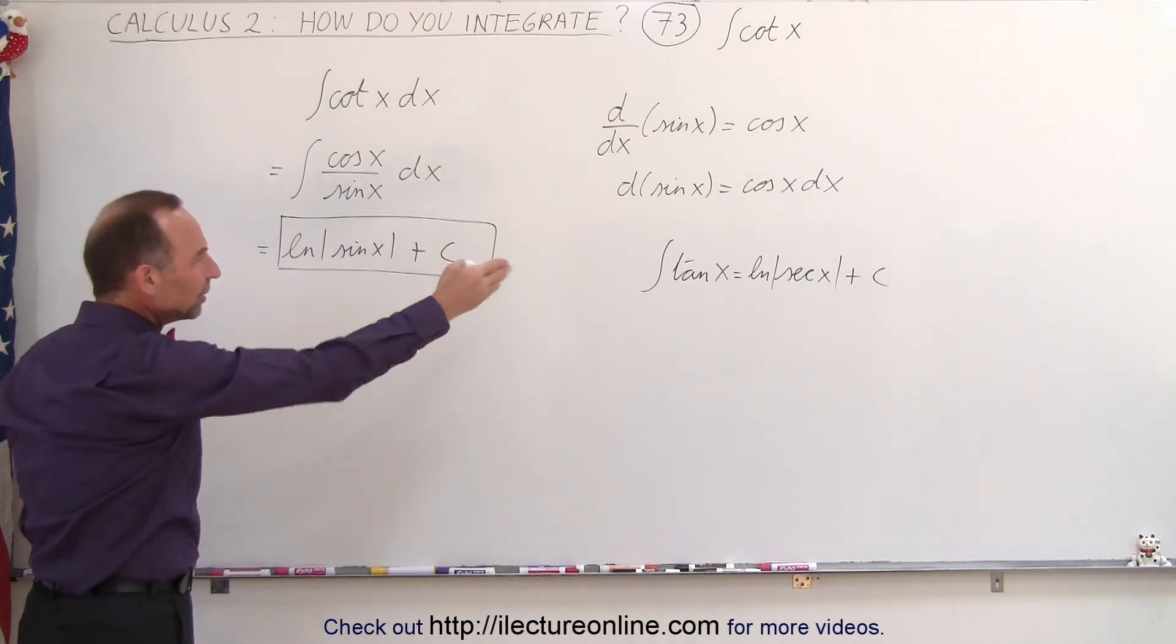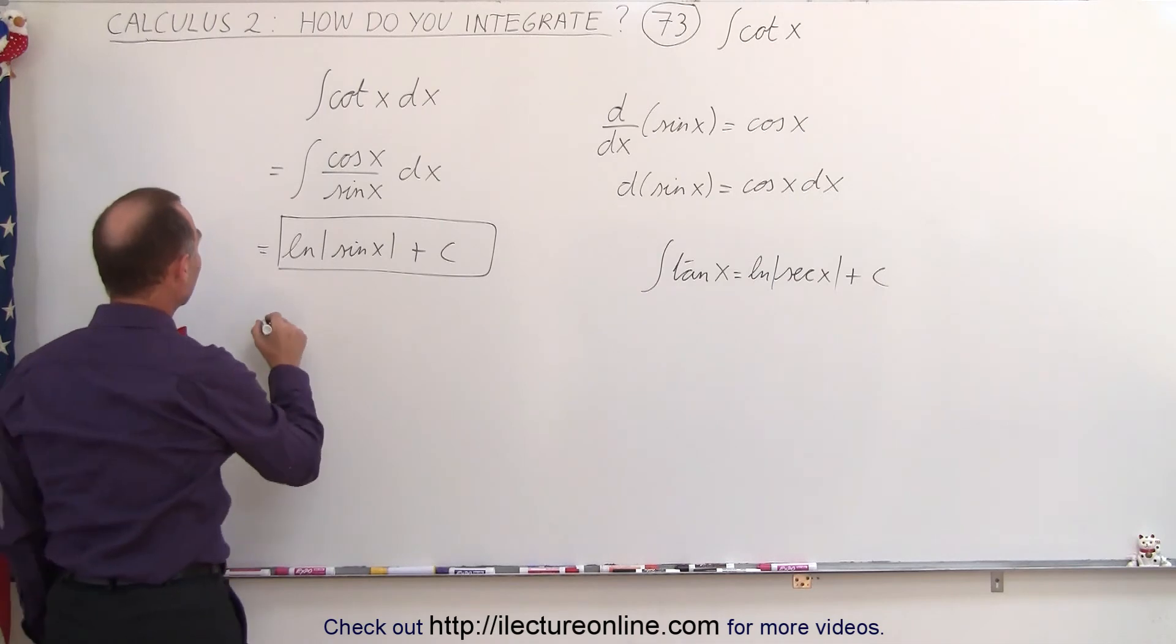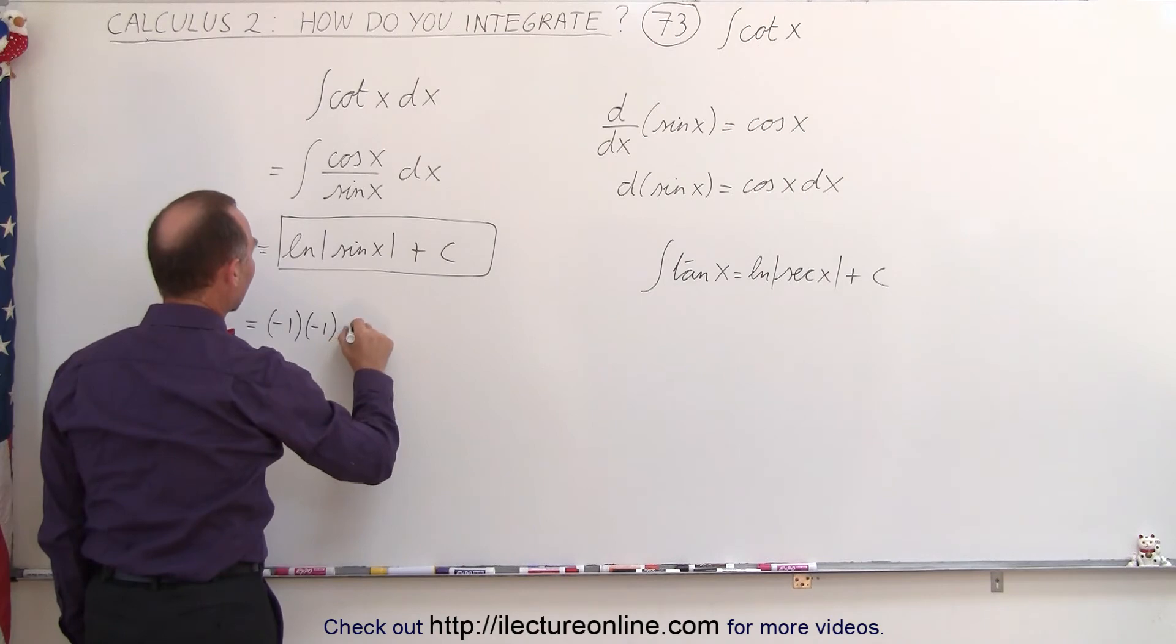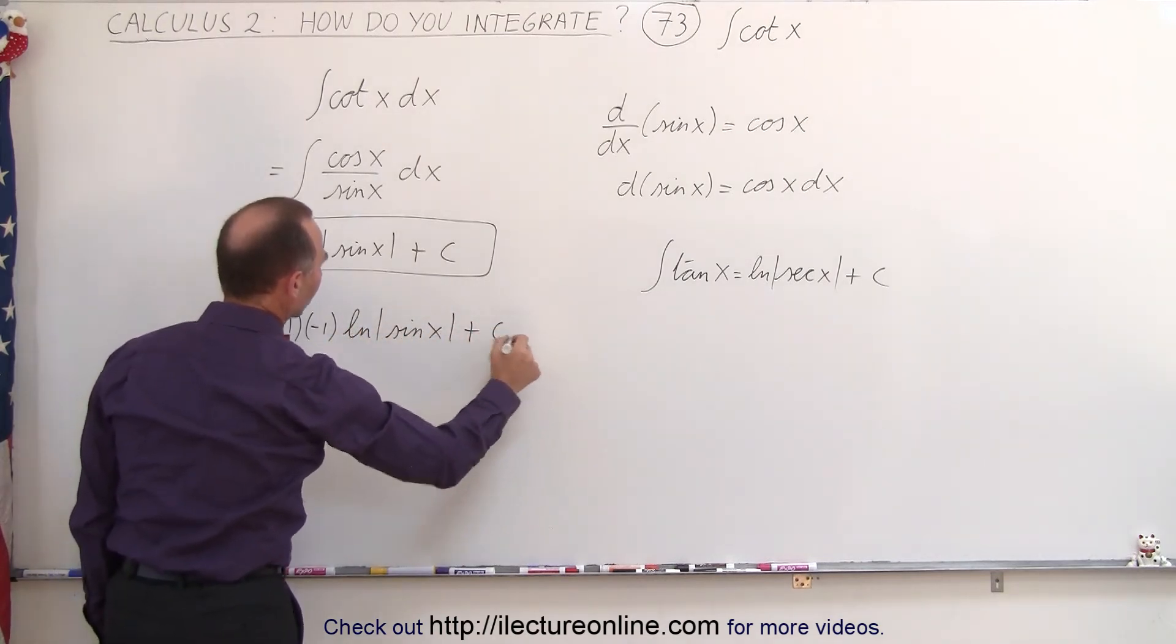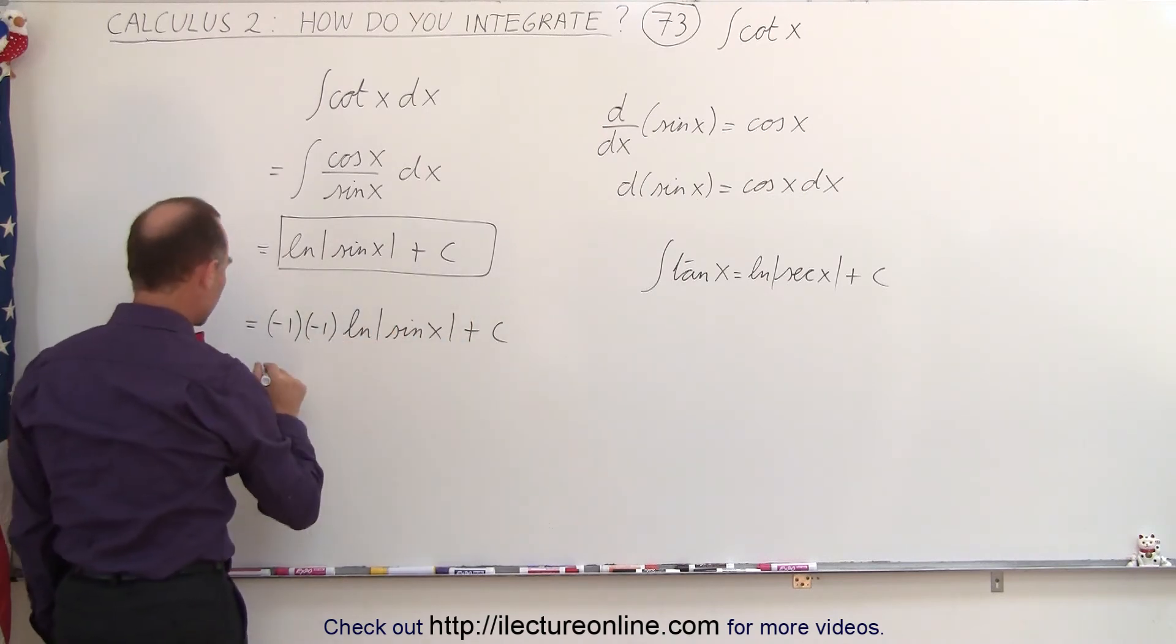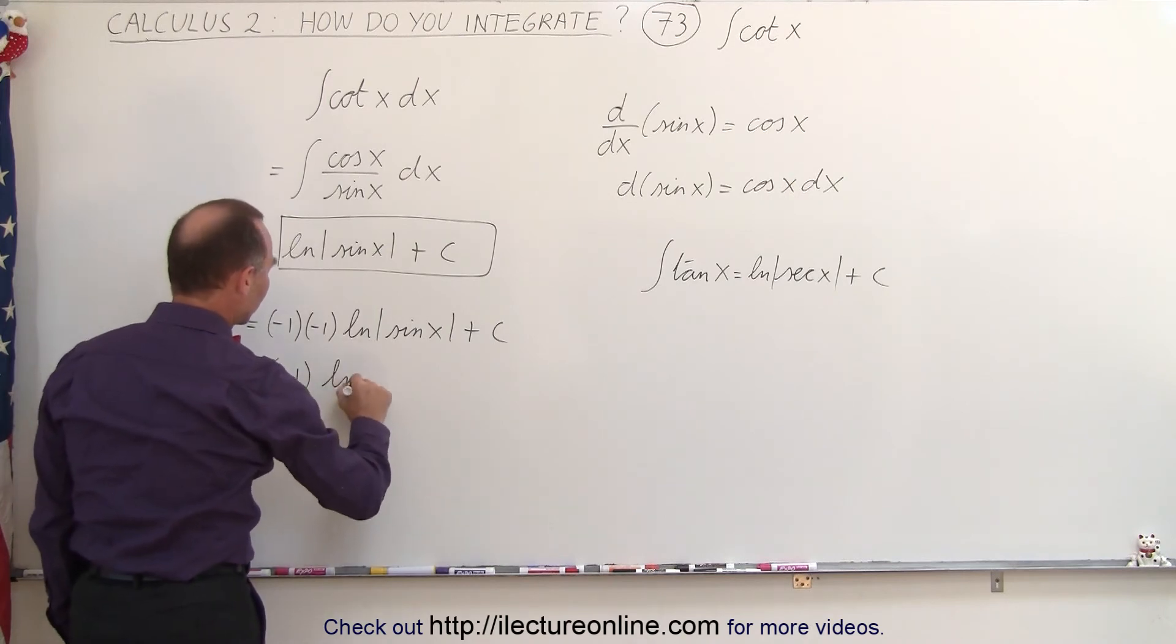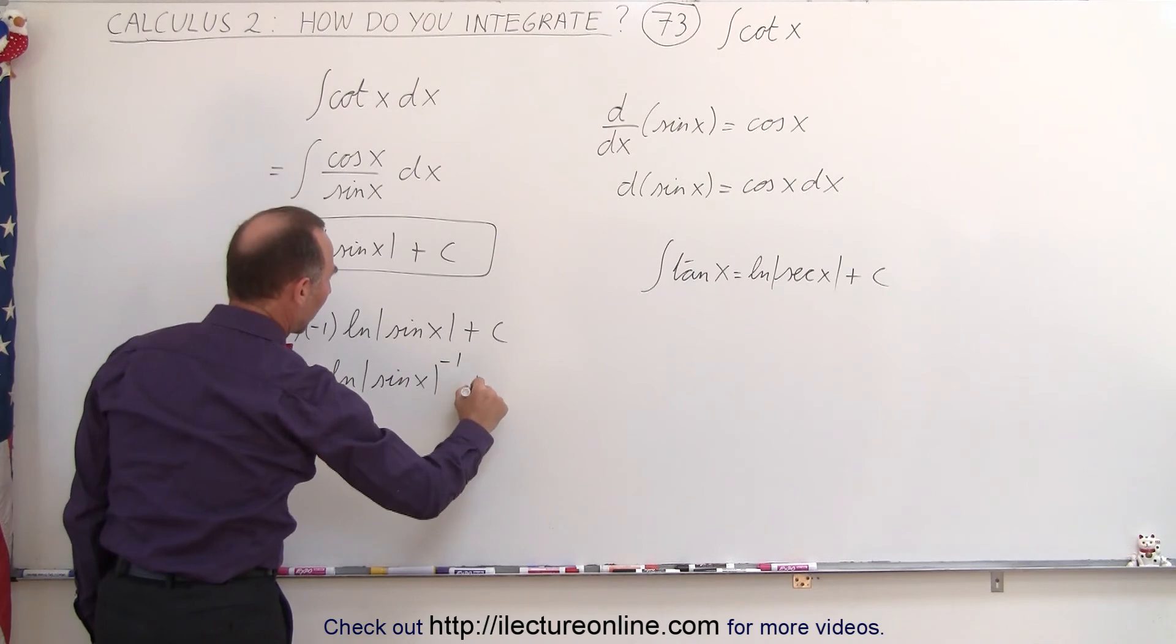So to make it look kind of the same as the integral of the tangent of x, what we could do, we could say, well, this is equal to a negative 1 times the negative 1 times the natural log of the sine of x plus a constant of integration. And then we can take one of these and place it over here. So this is equal to a negative 1 times the natural log of the sine of x raised to the minus 1 power plus c.